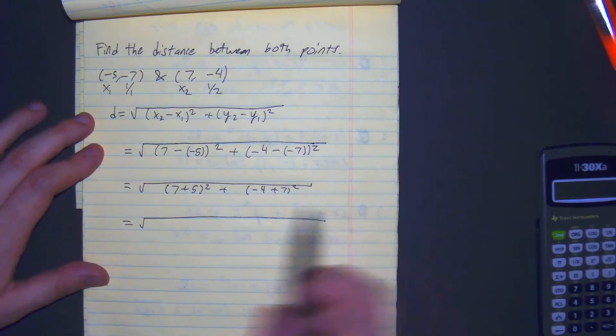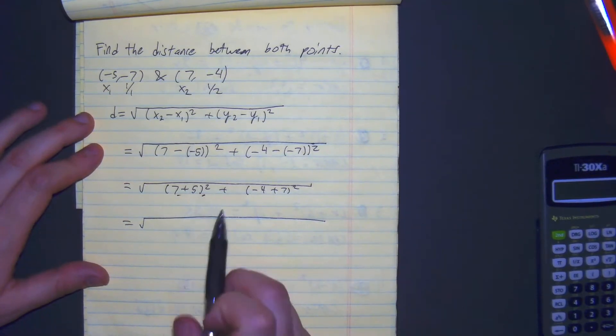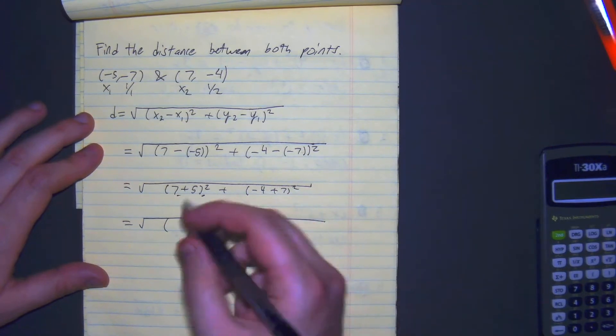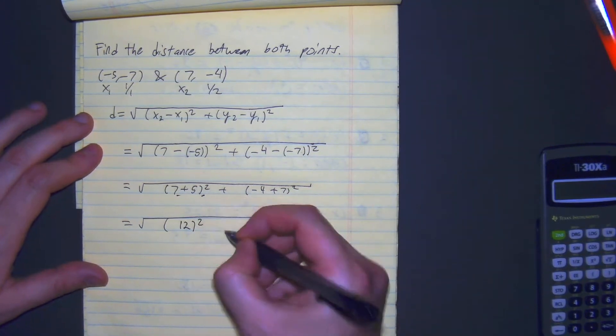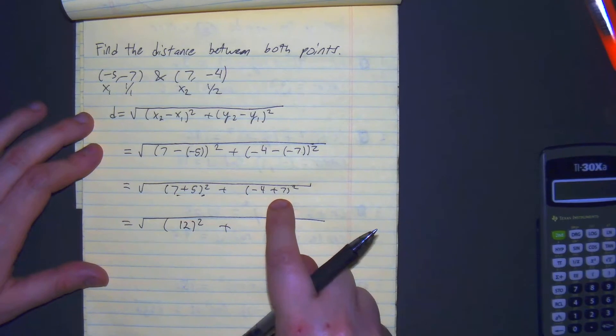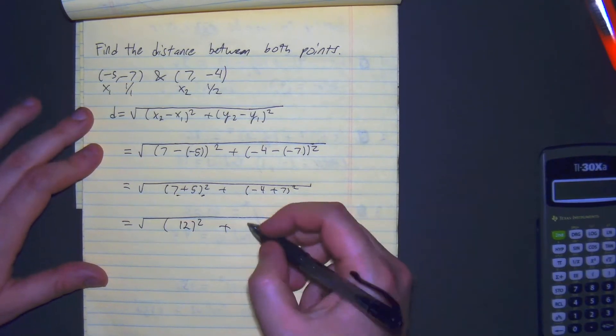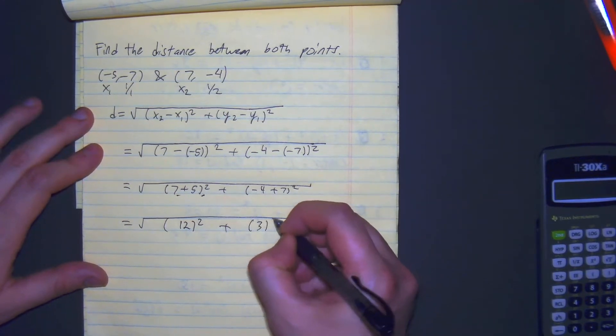From here, 7 plus 5 gives us an even 12 plus negative 4 plus 7, that gives you 3 squared.